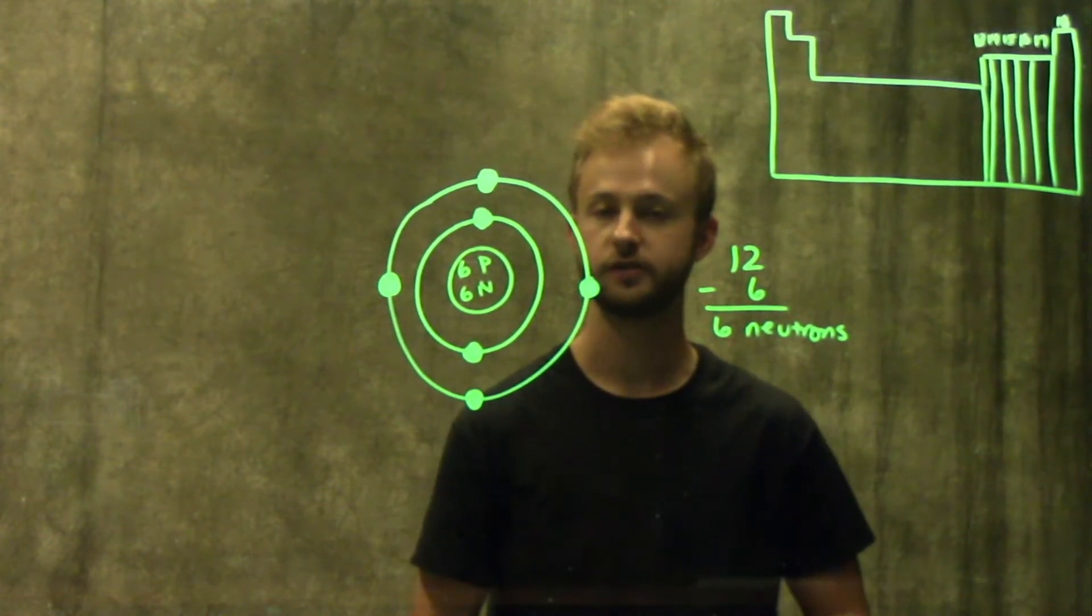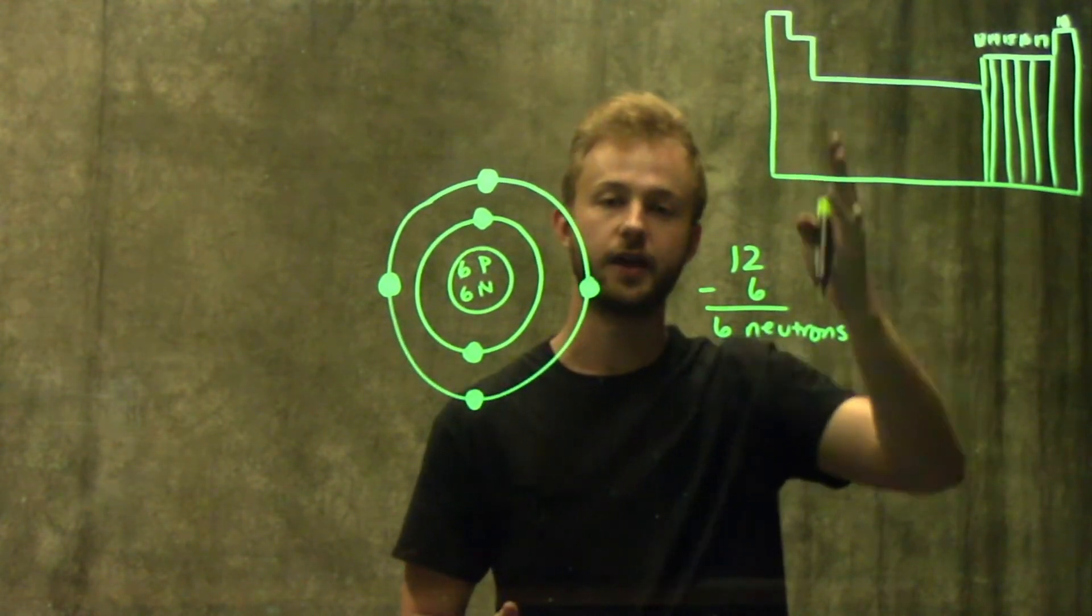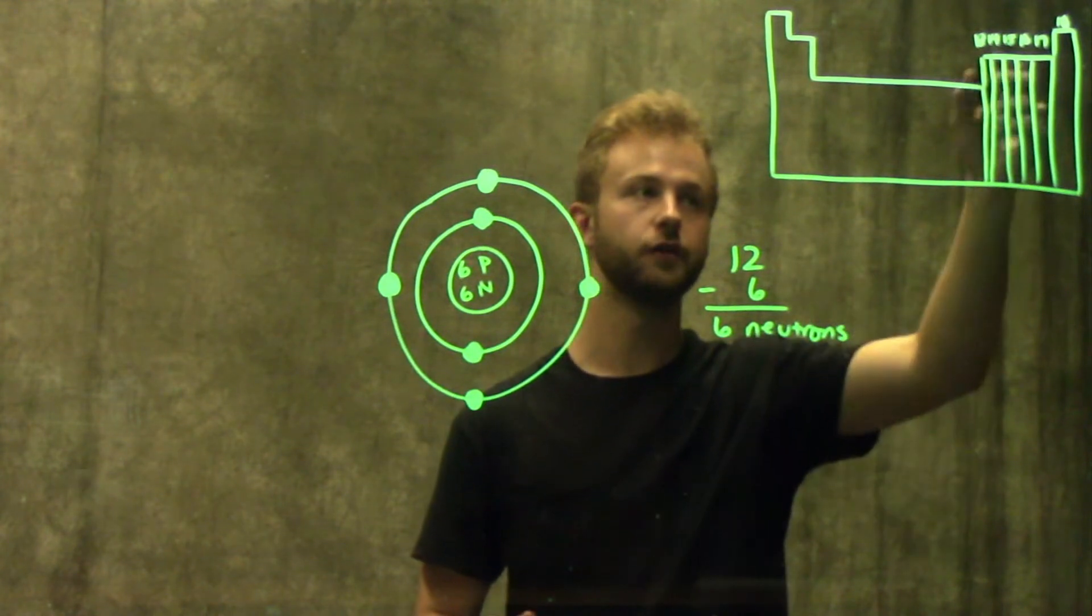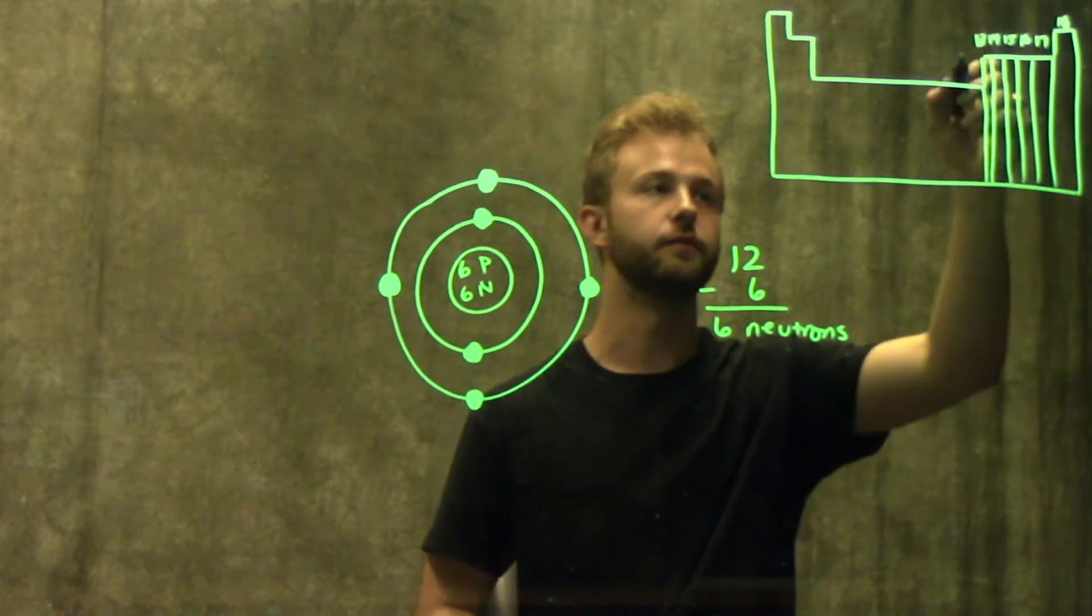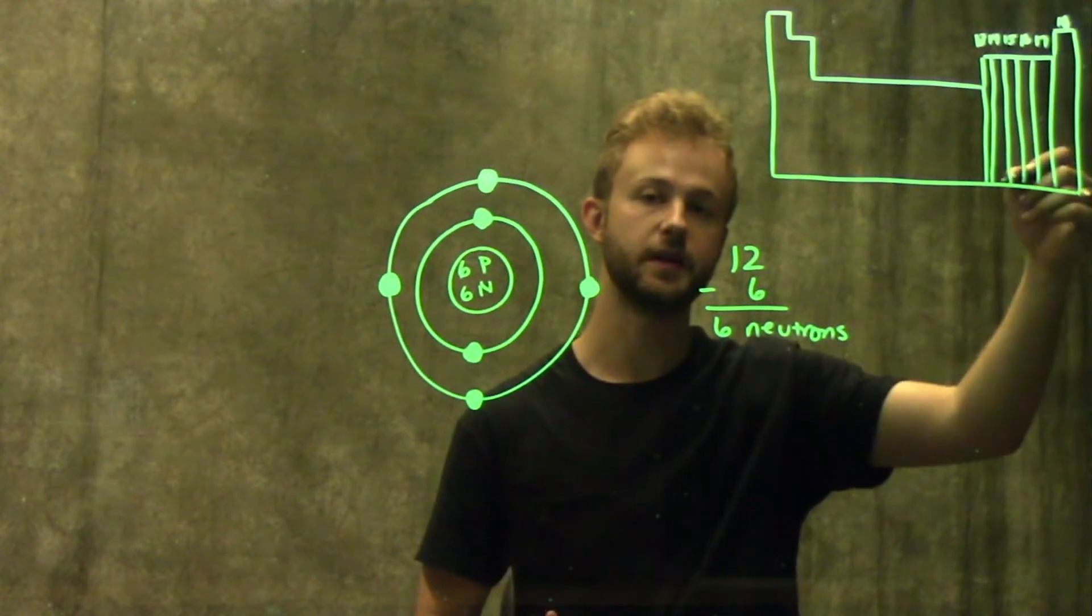an easy way to figure out the number of valence electrons an atom has is to look on the periodic table. Each of the columns has a number above it. If we go over to our non-metals, that's column numbers 13 through 17, and the noble gases would be column 18.